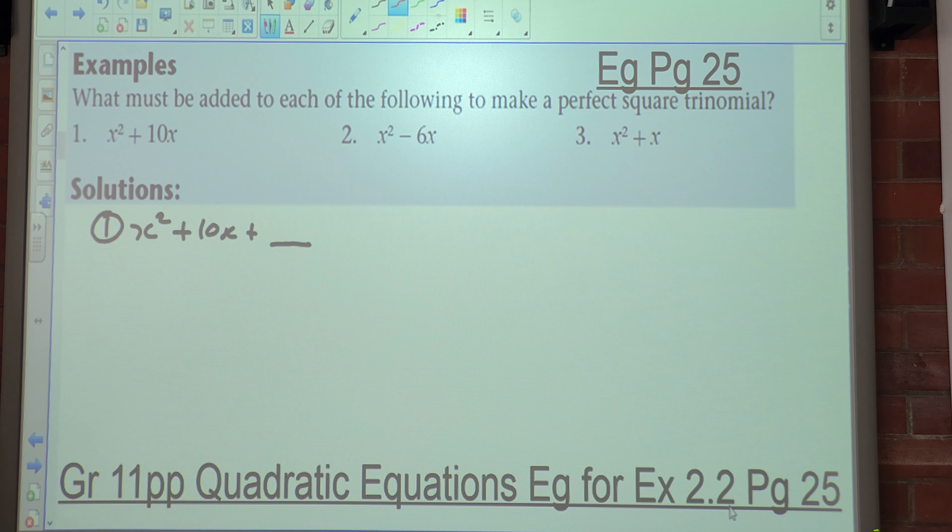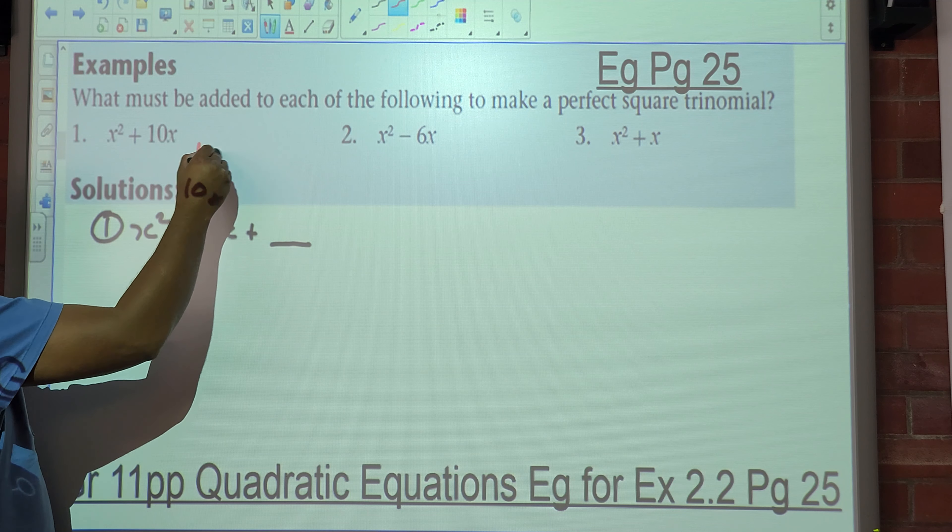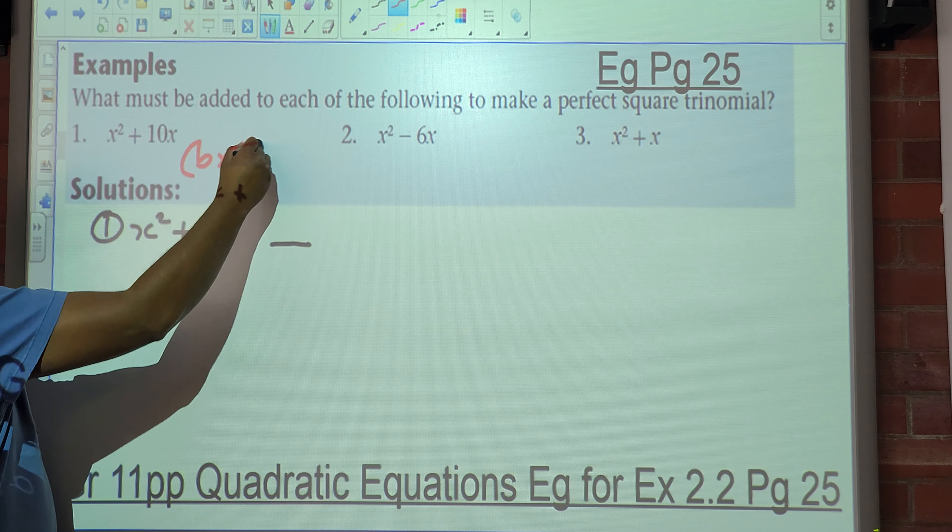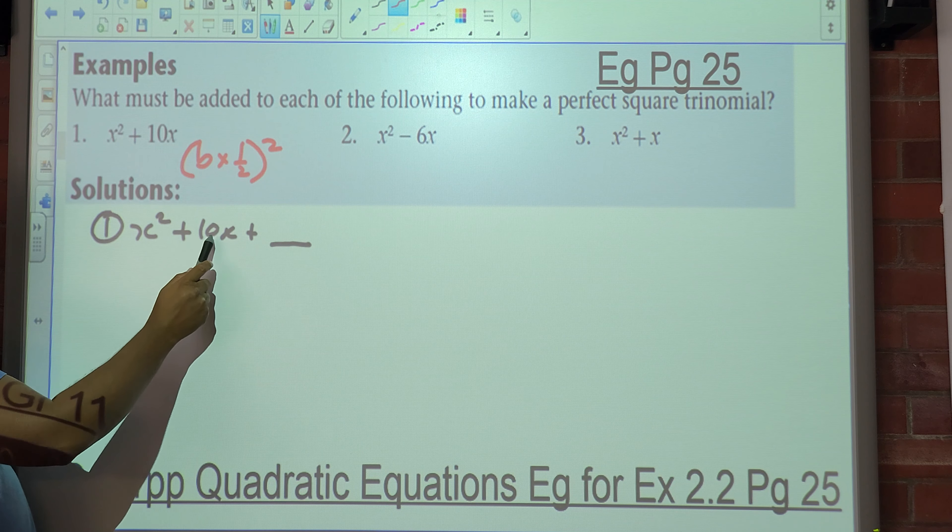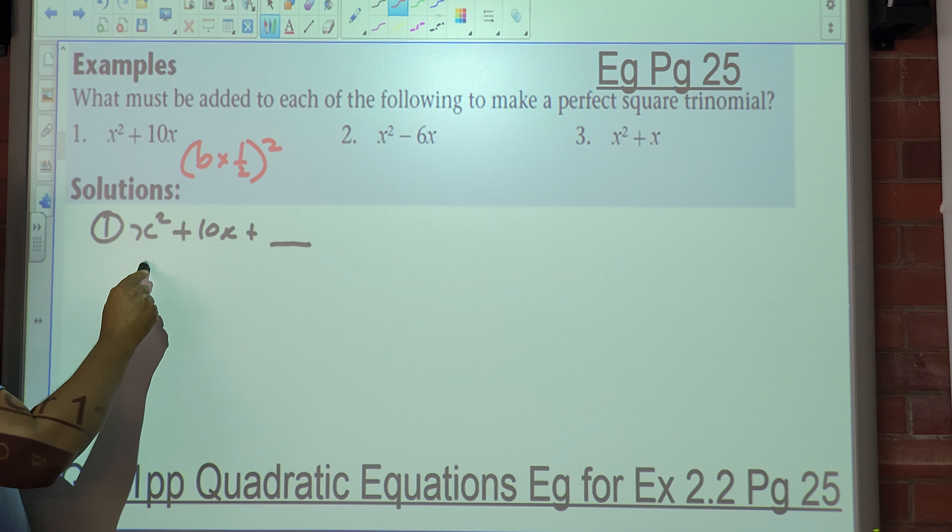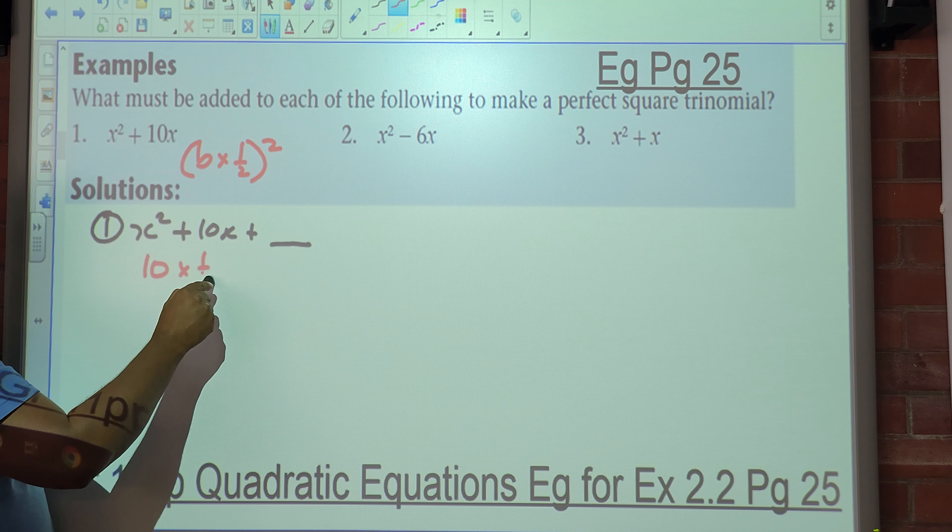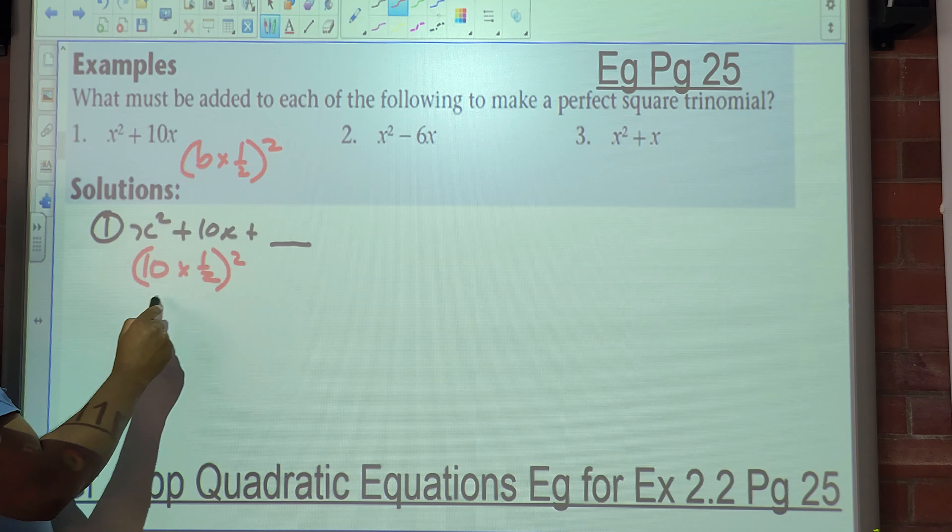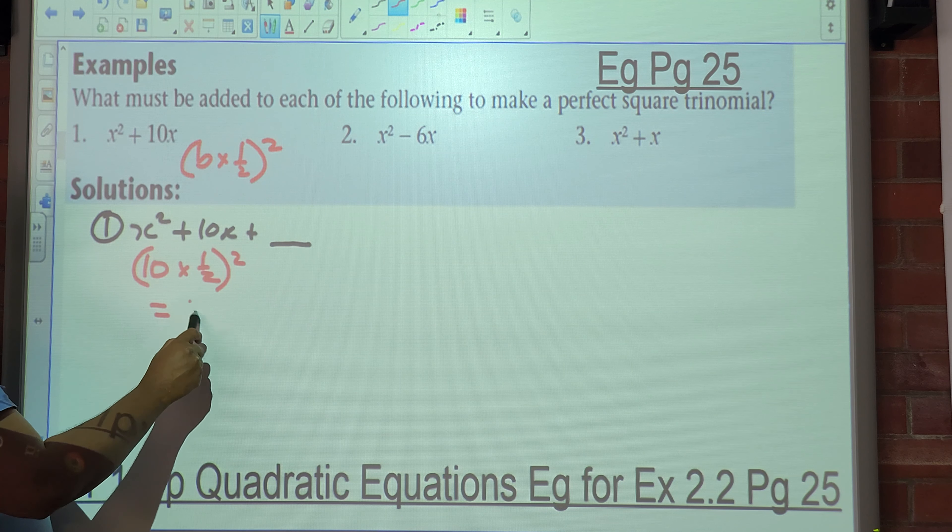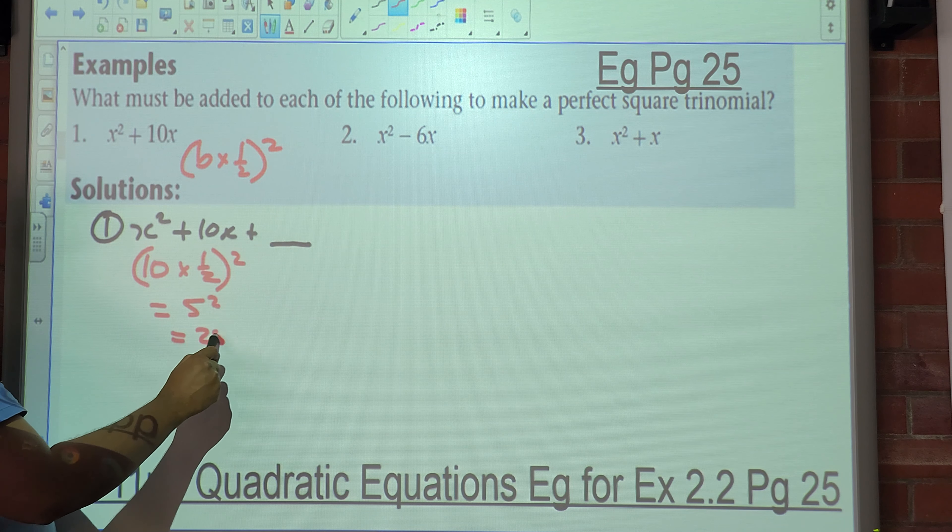So how do we get that term that must be added? It's going to be b times half squared. What's the b in this case? Ten. So it's ten multiplied by half squared. What's ten multiplied by half? Five. Five squared, which is twenty-five.